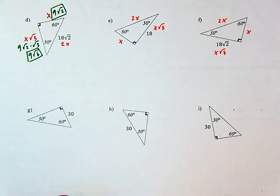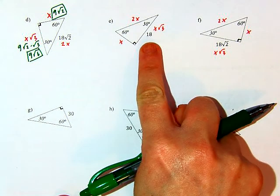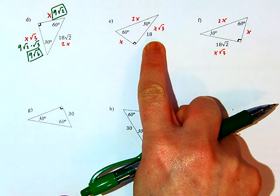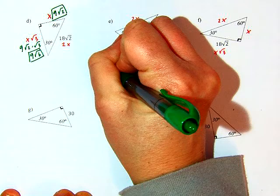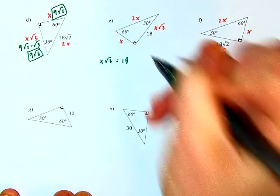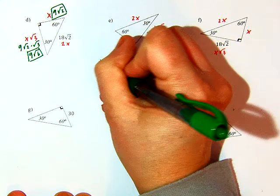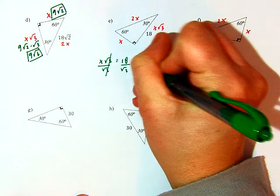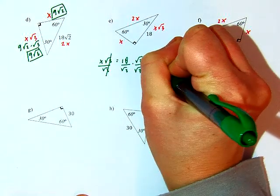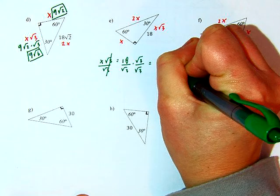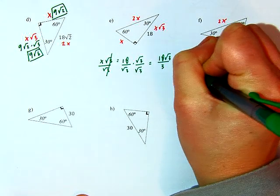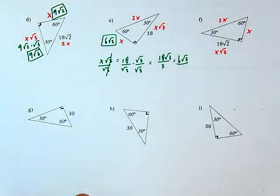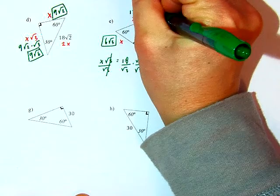Next, I'm given the longer leg: 18. I know that's my x root 3 side. So I'm taking 18, dividing by the square root of 3, and rationalizing. So x root 3 equals 18; divide each side by root 3, multiply by root 3 over itself, and I get 18 root 3 divided by 3, which gives me 6 root 3 as the short leg. If I double it, I get a hypotenuse of 12 root 3.